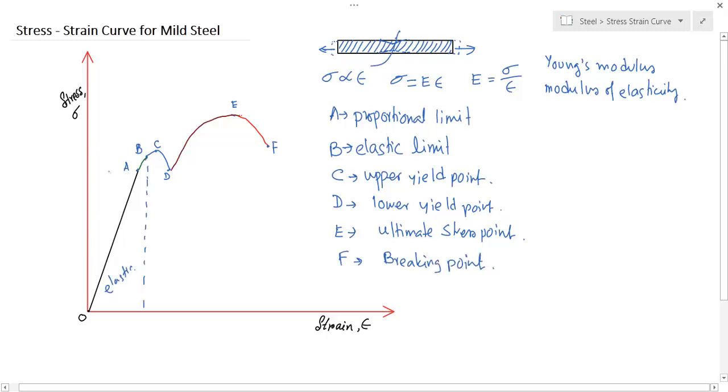Up to this point B, the material is elastic. After this, it is plastic. Stress corresponding to the point D is generally termed as yield stress.